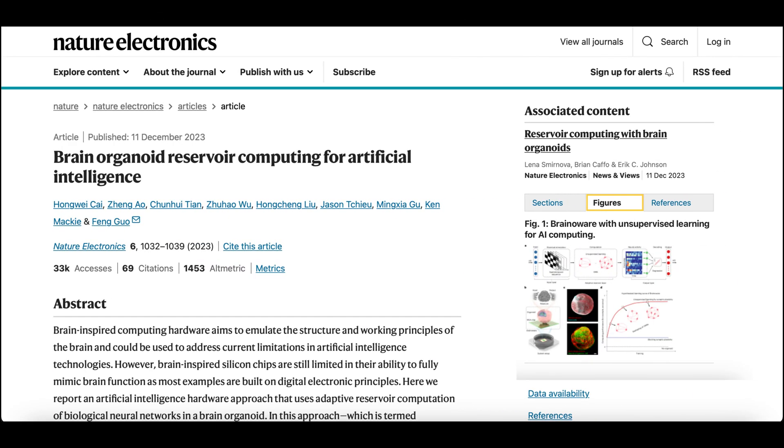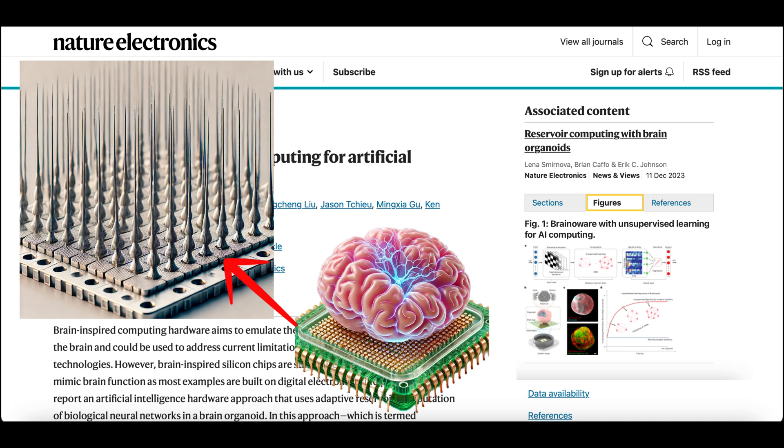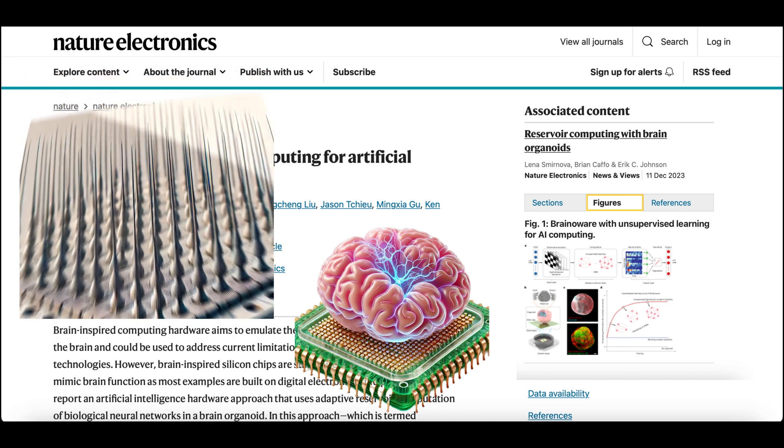In this article, researchers have developed a revolutionary AI hardware system called BrainAware, which integrates brain organoids with a high-density multi-electrode array, MEA, to perform complex computational tasks. If you wonder what MEA is, it consists of a grid of microscopic electrodes embedded in a surface, allowing researchers to send electrical signals to the tissue and measure the resulting neural activity. MEA serves as the interface between the brain organoid and the computational system.